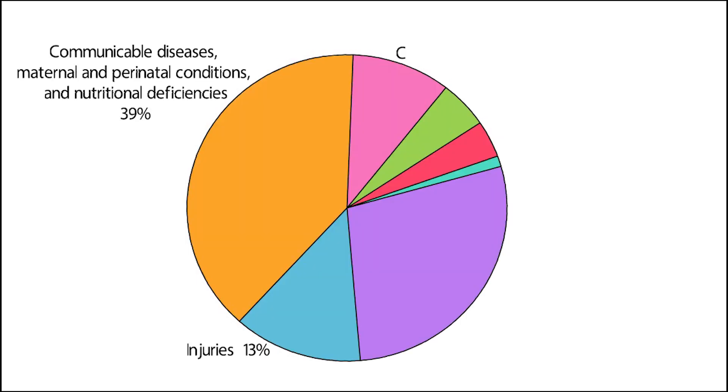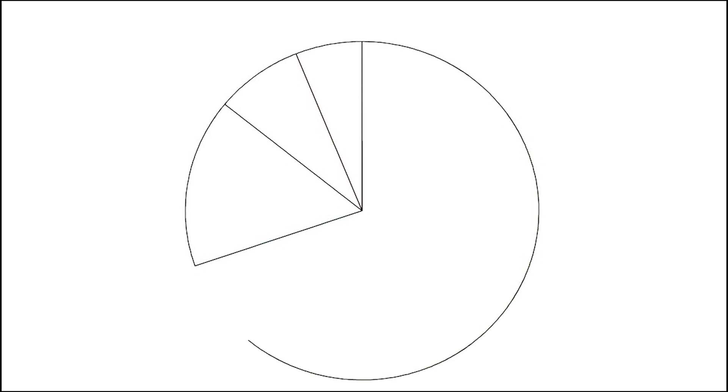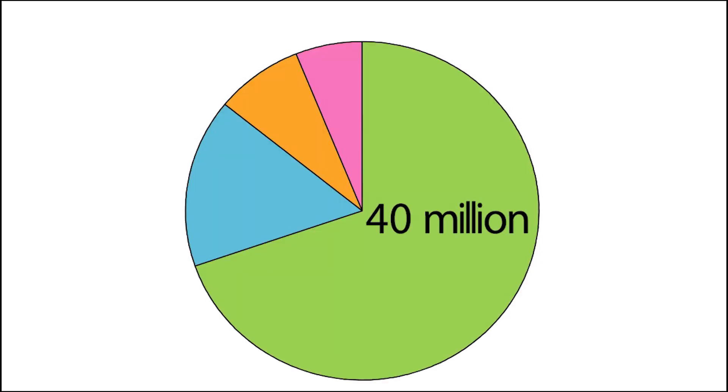Globally, the burden of chronic diseases is huge. Today it is estimated that chronic diseases are responsible for more than 60% of the total burden of disease. Chronic diseases are estimated to cause nearly 40 million deaths worldwide each year, or about 70% of all the deaths that occur.